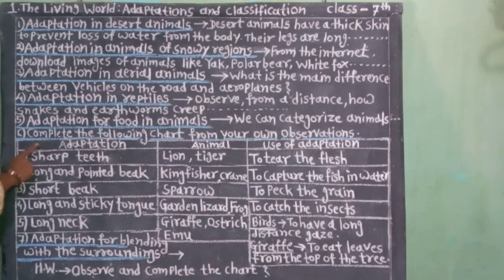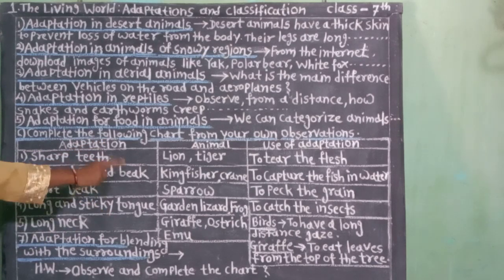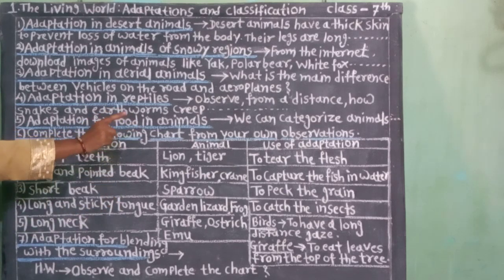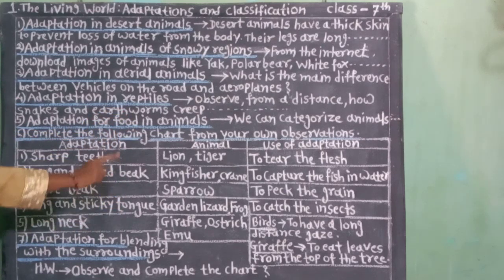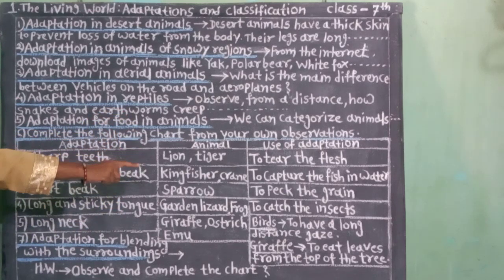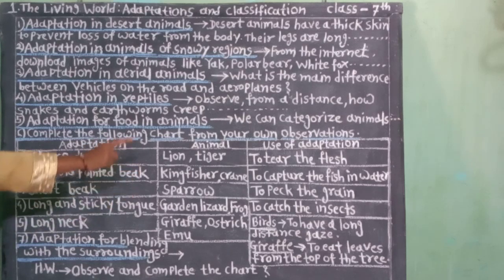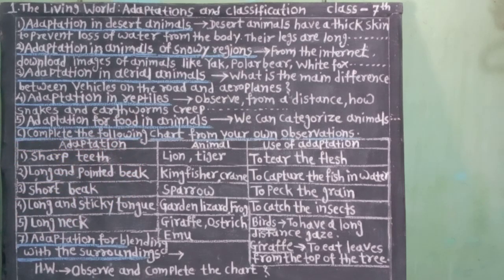जालेले अनुकुलन: लांब मान. प्राणी: जिराफ, शहामृग, एमु. अनुकुलनाचा उपयोग — पक्षी: दुरवर नजर टाकण्यासाठी. जिराफ: झाडाच्या वरवरची पाने खाण्यासाठी.